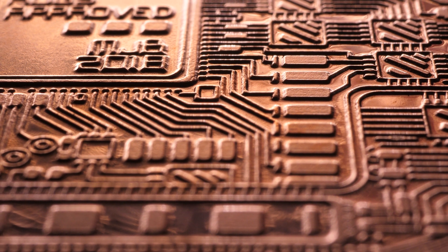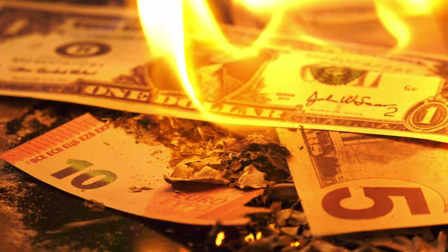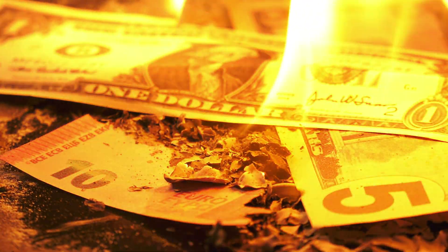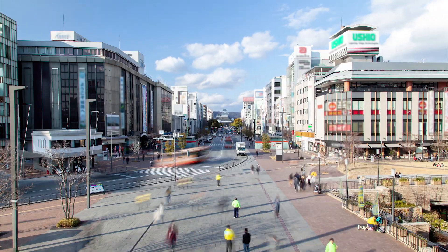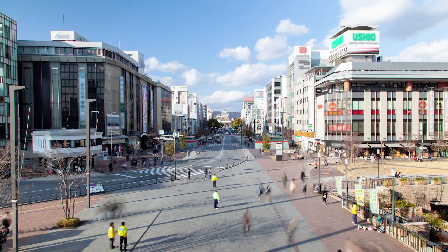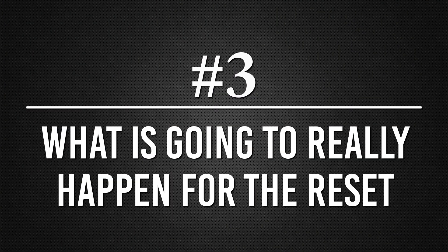The global currency reset has begun, just as it was predicted back in 1960. While there's been lots of talk about a U.S. dollar collapse, the rise of central bank digital currencies, and unsustainable debt levels, the reality is this currency reset isn't anything new — it's not a big surprise. In this video, I'm going to cover how this was predicted all the way back in 1960, what history shows us how this currency reset process really works, what the new currency will be, and what you need to be watching as this all unfolds right before our very eyes.